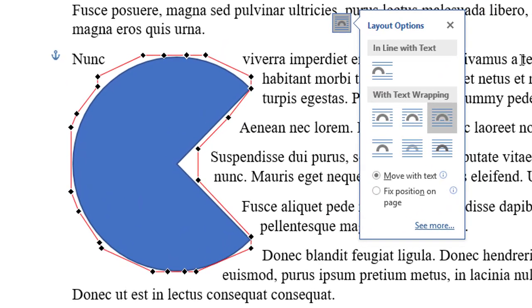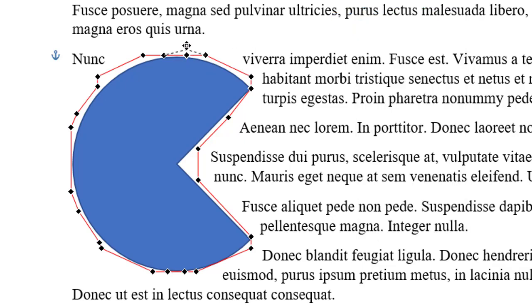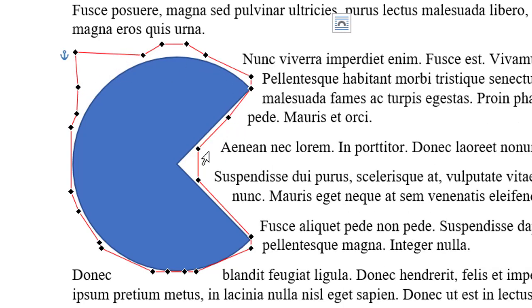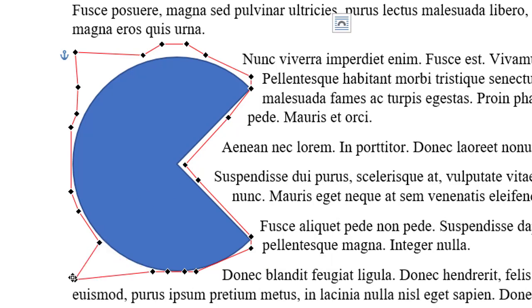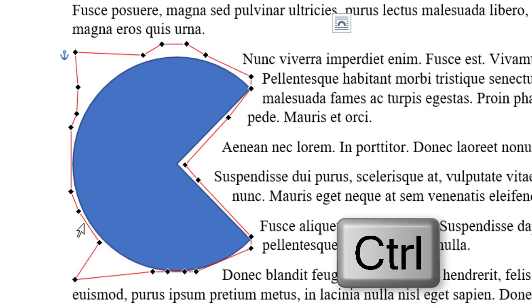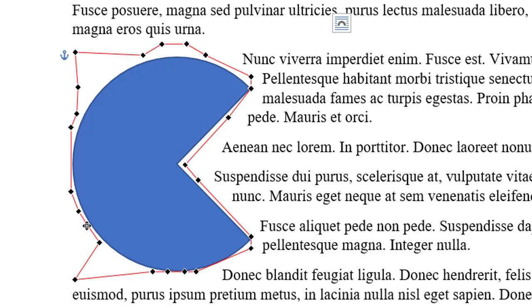What you see here is a bounding box around the image, separating it from the text. You can drag each point to move it in or out, modifying the bounding box as you see here. So you can make the text come in a little tighter over here, or you can keep it more distant over here. To add another wrapping point, Ctrl-click the mouse on the bounding box. This new wrapping point allows me more control over the image and the text.